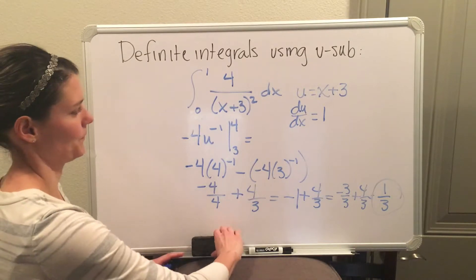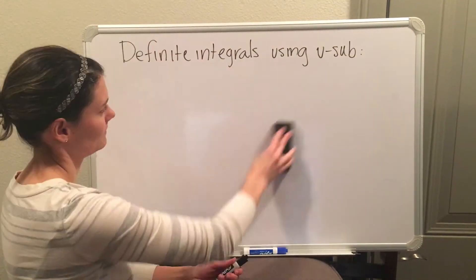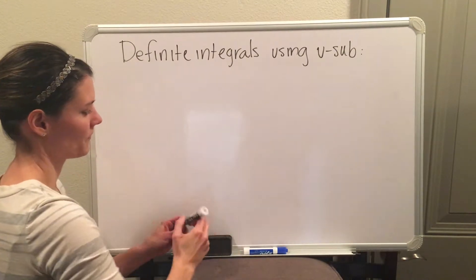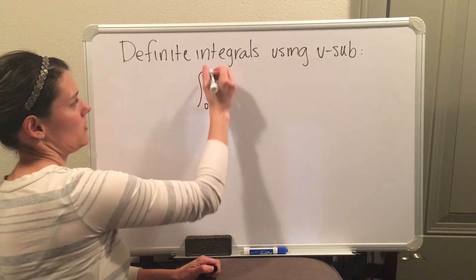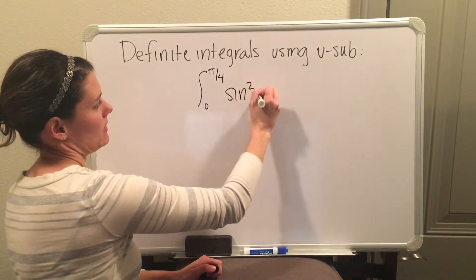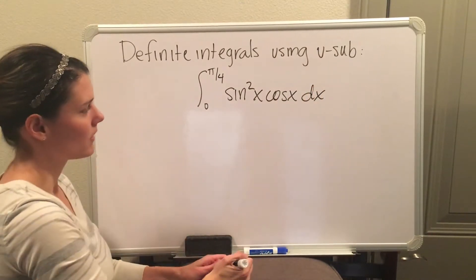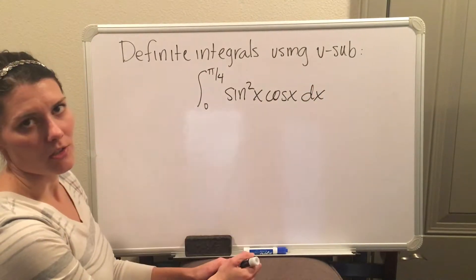Let's do one more. Let's do the integral from 0 to pi over 4 of sine squared of x times cosine of x. In this case, we have two trig functions, sine and cosine, and one of them is raised to a power.